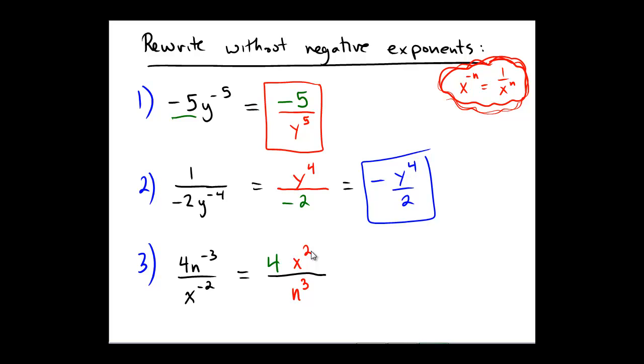Because it was a negative exponent in the denominator, hence it becomes a positive exponent in the numerator. Final answer, 4x squared over n cubed.